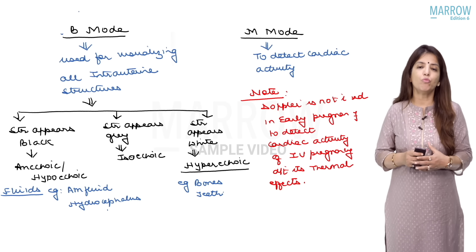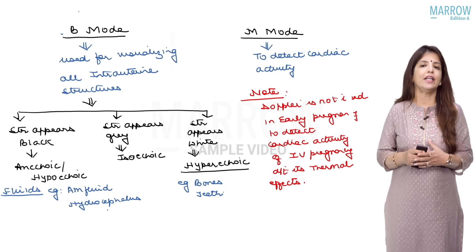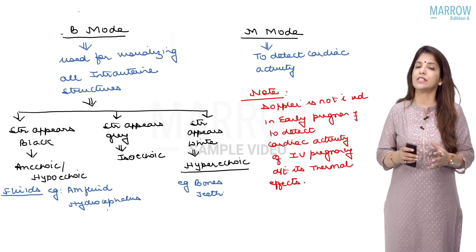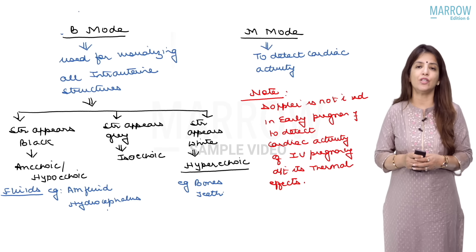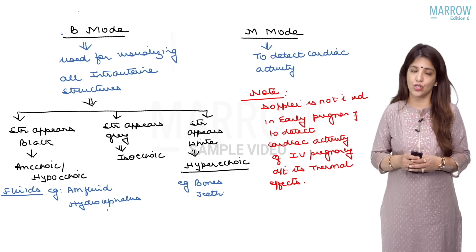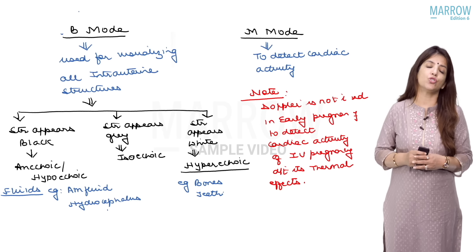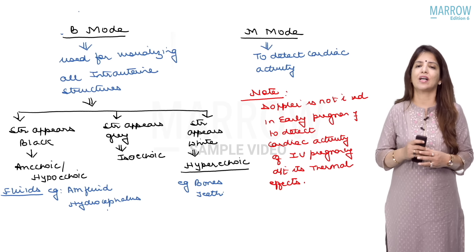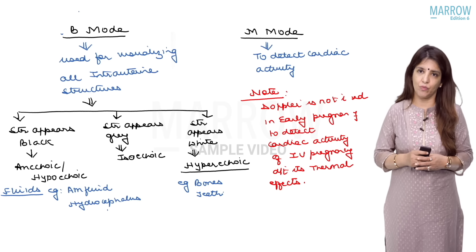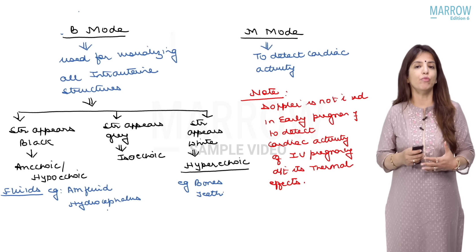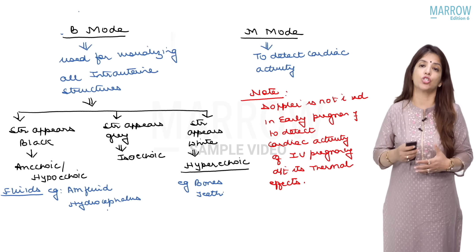Brightness mode is basically used for identifying all the intrauterine structures, whereas M mode is used to detect cardiac activity — that is, M mode is the motion mode.